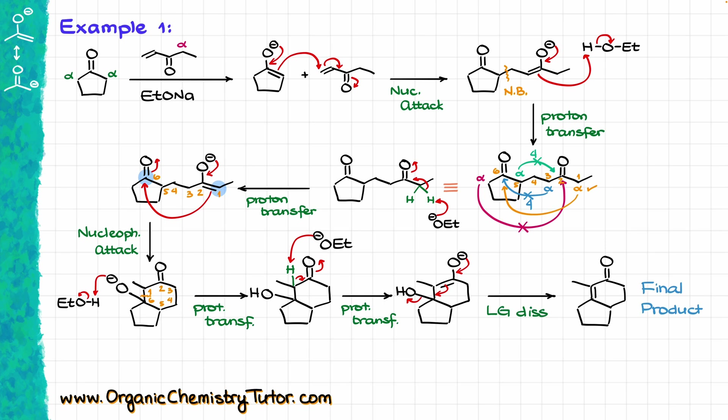Another thing to always remember about the Robinson annulation: in your product you are always going to see a six-membered ring with the alpha-beta unsaturated moiety in it in the final structure. That is always going to be a signature of the Robinson annulation reaction. If after writing your mechanism you didn't get that piece, you did something wrong. The rest of the molecule can be all over the place depending on your starting materials, but that part is always going to be there.